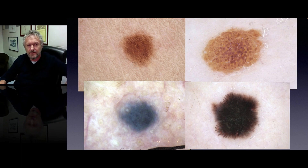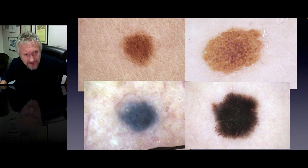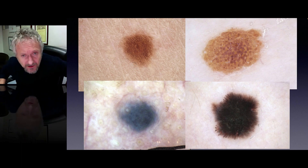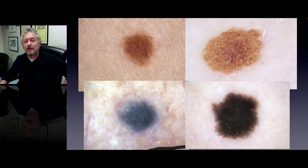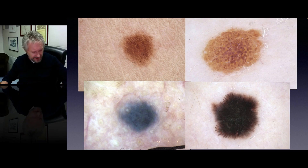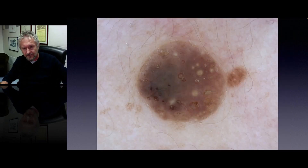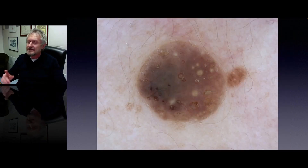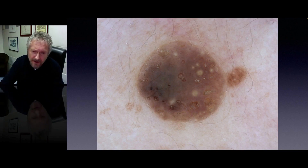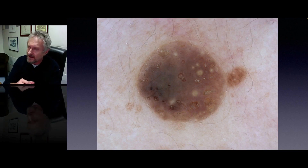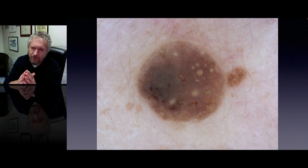So these are the four most common types of nevi: reticular nevi, globular nevi, blue nevi, and Spitz nevi. Now let's speak for a moment about seborrheic keratosis. Here the problem is that the overall architecture can be quite irregular in many instances.